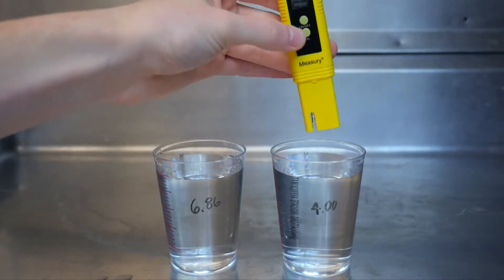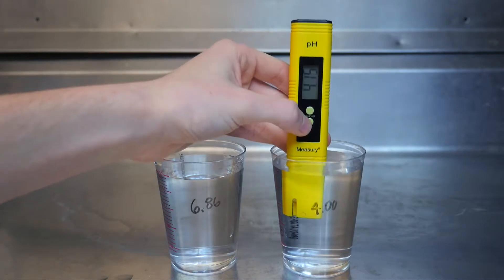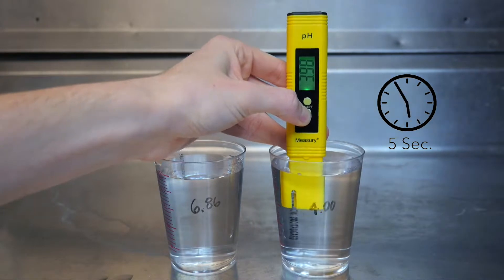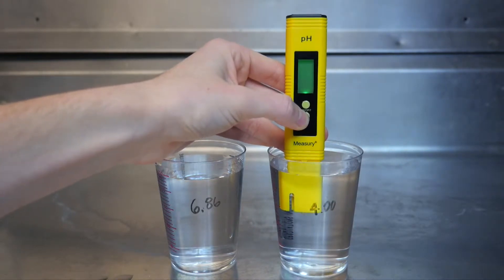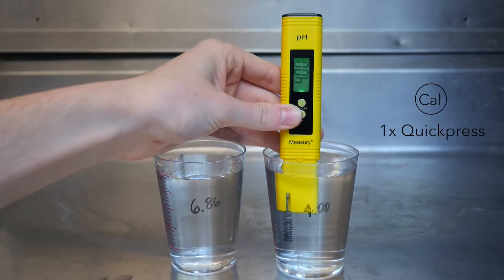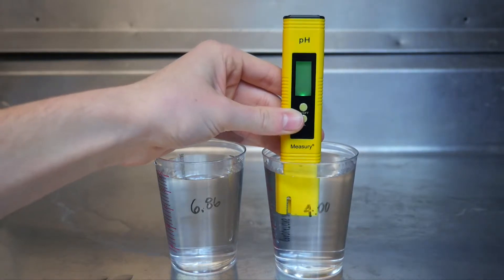Now, insert the meter's electrode into the 4.0 pH solution. Again, press and hold down the cal button for five seconds. After you release the button, 6.86 will again flash on the screen, but this time quick press the cal button and the display will then flash 4.0. Wait until the display stops flashing.